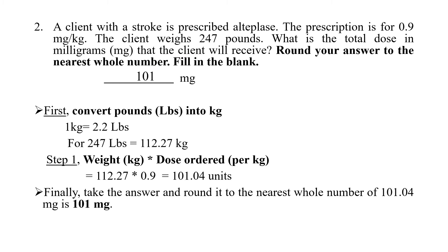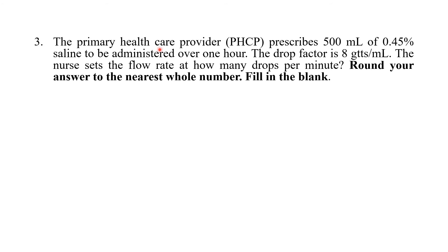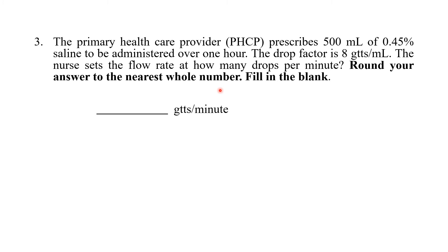Next question: The primary health care provider prescribes 500 ml of 0.45% saline to be administered over one hour. The drop factor is 8 gtts per ml. The nurse sets the flow rate at how many drops per minute? Round your answer to the nearest whole number. Fill in the blank.